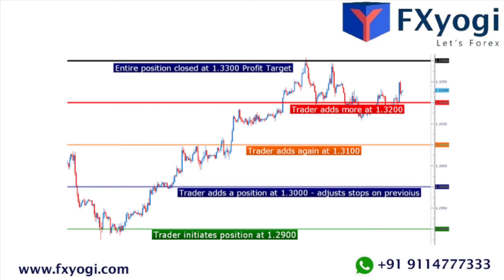With your stop at 1.3100, you have a 200 pip stop on this position. If it hits your stop, that is a $50 loss — value per pip movement of $0.25 into a stop loss of 200 pips.